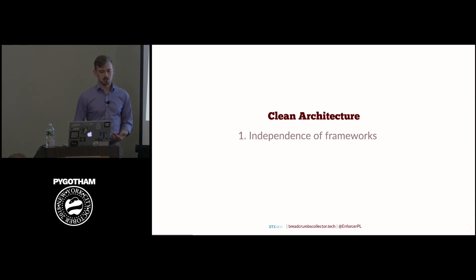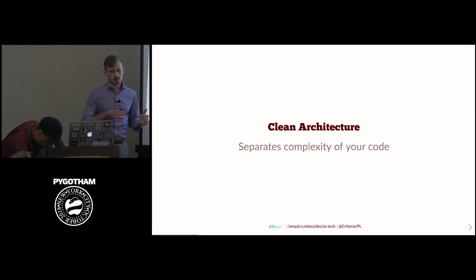So it promises you you'll be independent on frameworks. Not to mention that you will not need them, but if you upgrade or want to switch, it's not that painful. You can write tests very easily, and they will test what's important and not the framework. And you will somehow be independent of UI, database, or whatever. So the goal of clean architecture is to separate complexity of your code, of your business requirements, from the complexities of the outside, just like frameworks and so on.